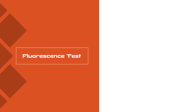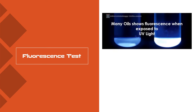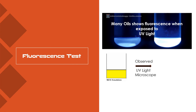Moving on to the next test — the fluorescence test. Many oils show fluorescence when exposed to UV light. Take a water in oil type of emulsion in a beaker and observe it under a UV light microscope. If the entire emulsion shows fluorescence, you can say it is water in oil type. The reason is that oil is the continuous phase and is present in larger quantity, so the entire emulsion shows fluorescence.